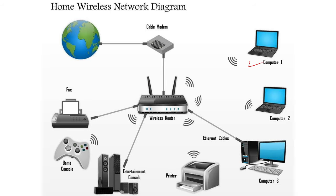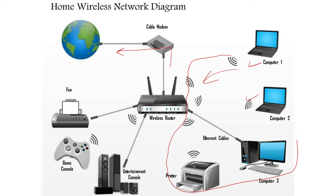Looking at this diagram, computers are all connecting via Wi-Fi to the router. To get internet connectivity the router must also be connected to the web via a service provider. If you're on Wi-Fi you might connect to devices within the LAN — for example, to print to a printer, you're not going through the internet; you're just connecting via the same wireless router which is relaying your data to the printer.